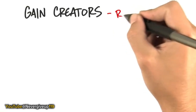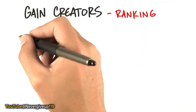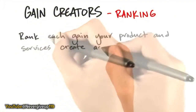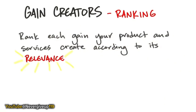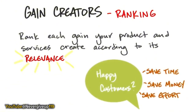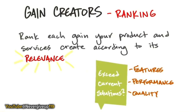Much like ranking pain, think about ranking gains. Make a list of what each gain your products and services create according to its relevance to the customer. You're going to make your first list thinking you've got it — here's what I'm going to solve for pain and create for gain — because it's your opinion or you're a domain expert. But at the end of the day, your business isn't about your opinion. You need to hear this from customers. Much like pains, you want to understand: is this a substantial or insignificant gain creator, and what is the frequency that it occurs?